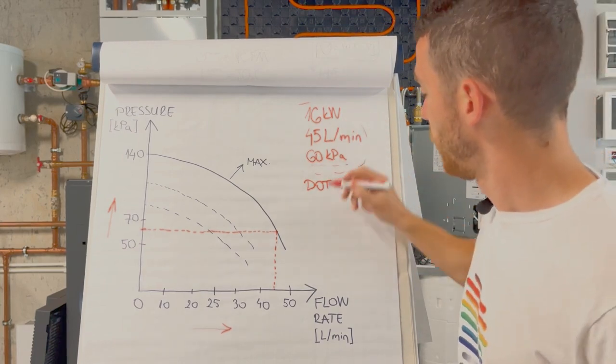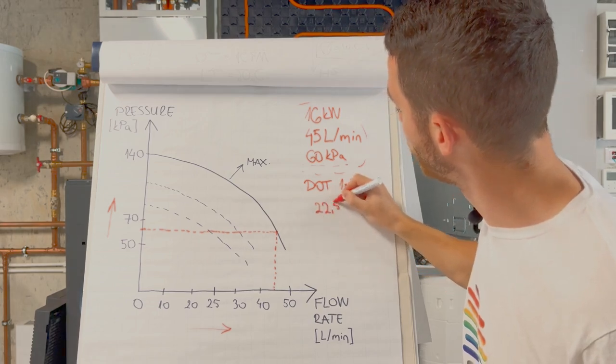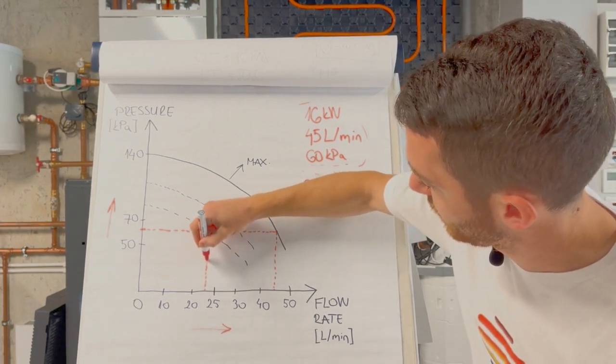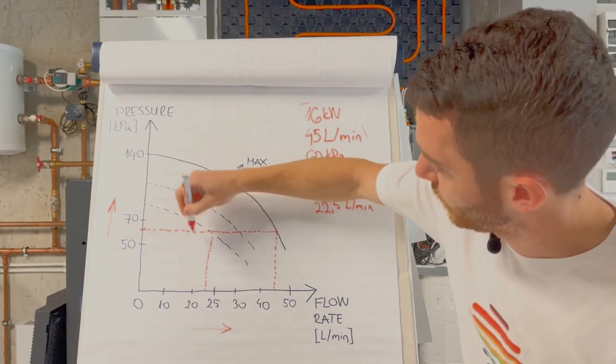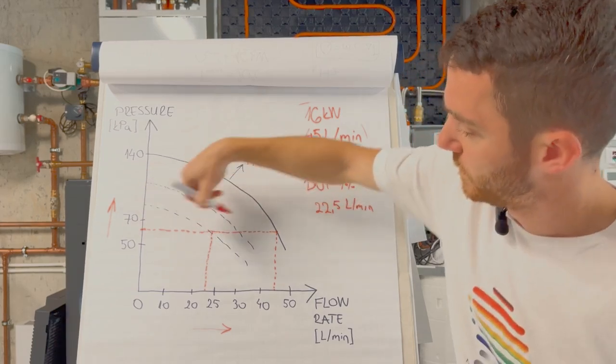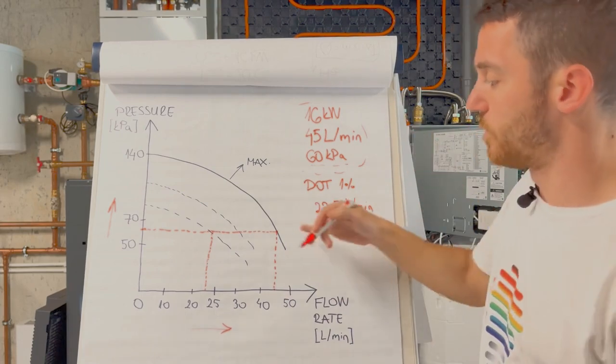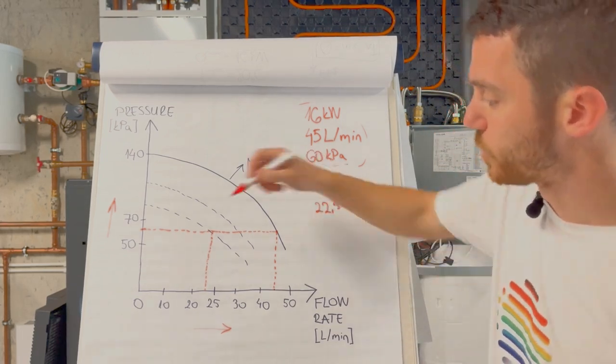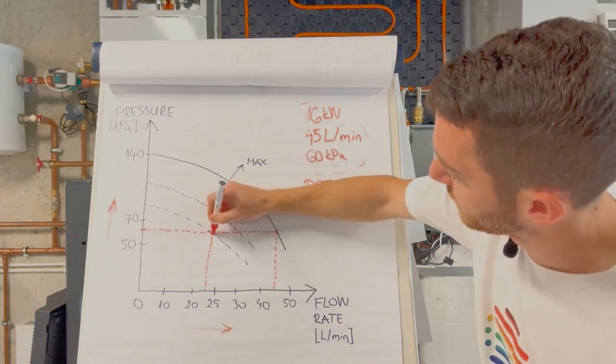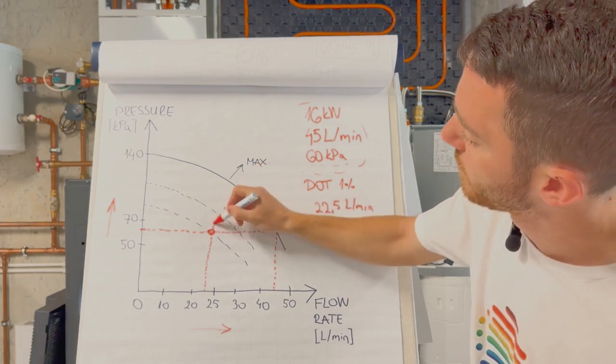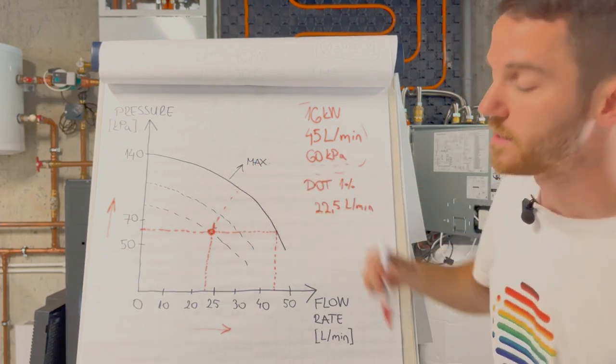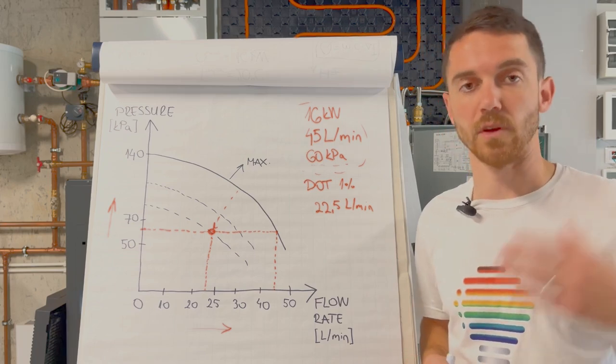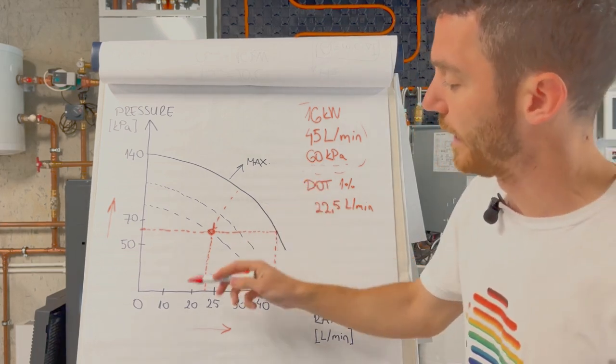For example, half flow rate, so 22.5 liters per minute, we are somewhere here. And here for our 60 kilowatt, let's say 60 is maximum speed. But let's say that we have 60 kilopascal, which will probably be much lower, we are here on lower curve. Lower curve means lower electric consumption. Pump is modulating, compressor is modulating because it's inverter, so we have less consumption here.